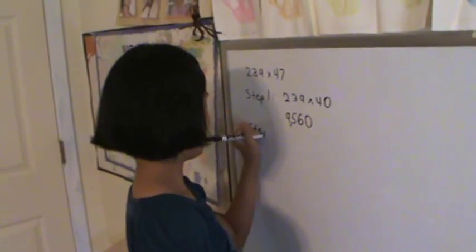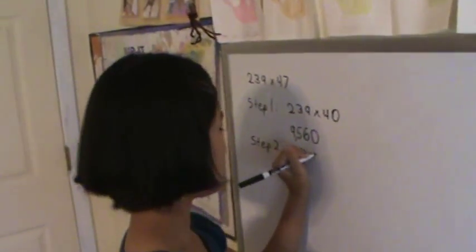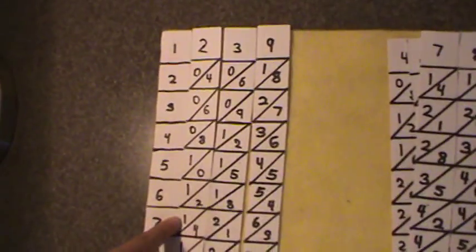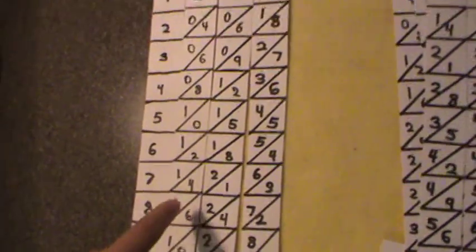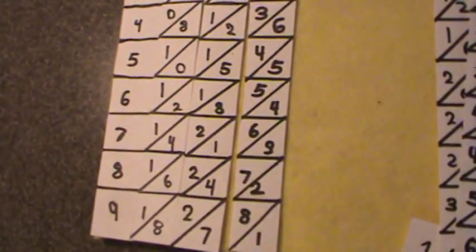Step 2 is where you multiply 239 by 7. To do that, you go down to the 7 number. The first number you come to is 1. The second number you come to is 4, and you add that to 2 to make 6.